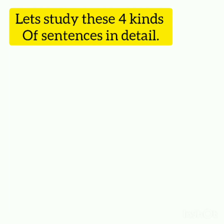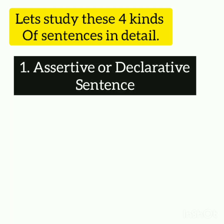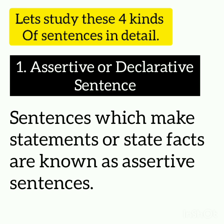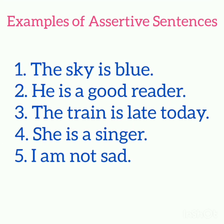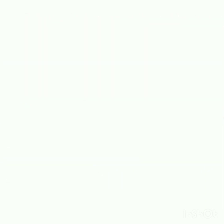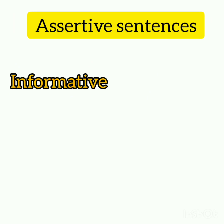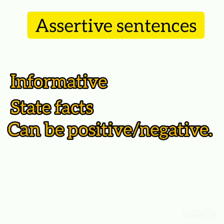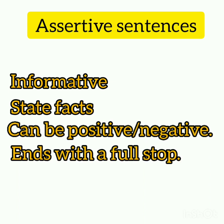Let's consider all four kinds of sentences in detail. First, assertive, also known as declarative sentence. Sentences which make statements or state facts are known as assertive sentences. For example, 'The sky is blue' — this states a fact. 'He is a good reader' — here the person is asserting that someone is a good reader. Assertive statements are simply informative; they declare information and state facts or assertions, which can be positive as well as negative. Usually, these sentences end with a full stop.